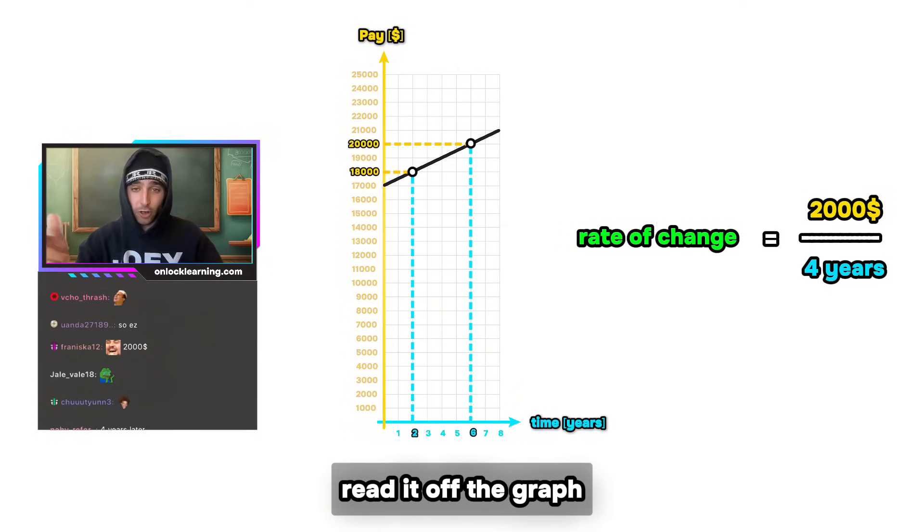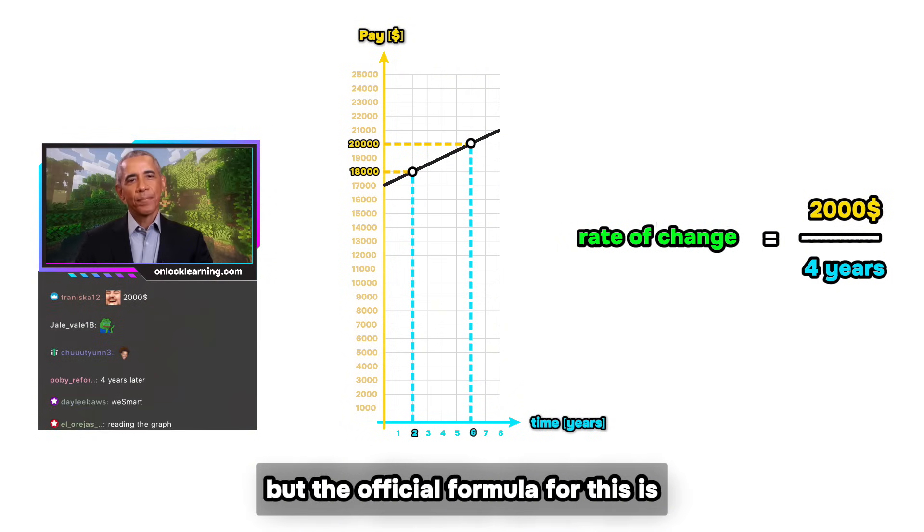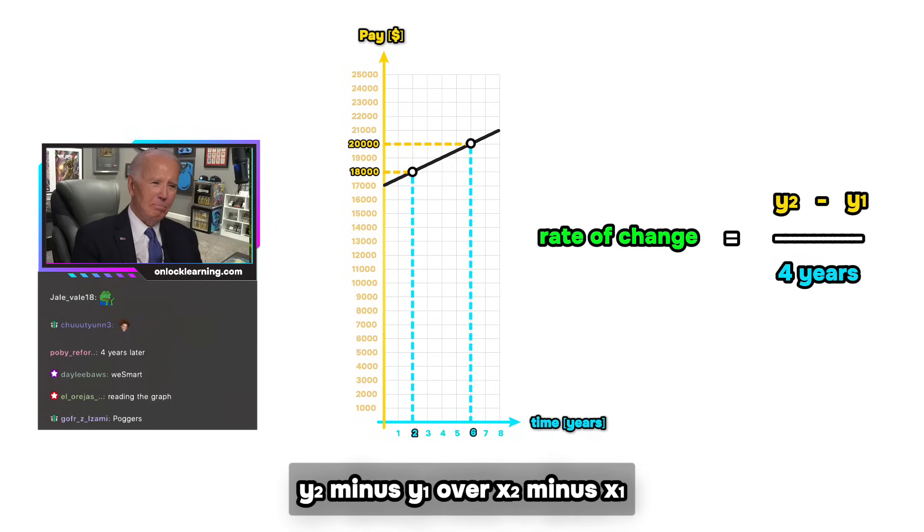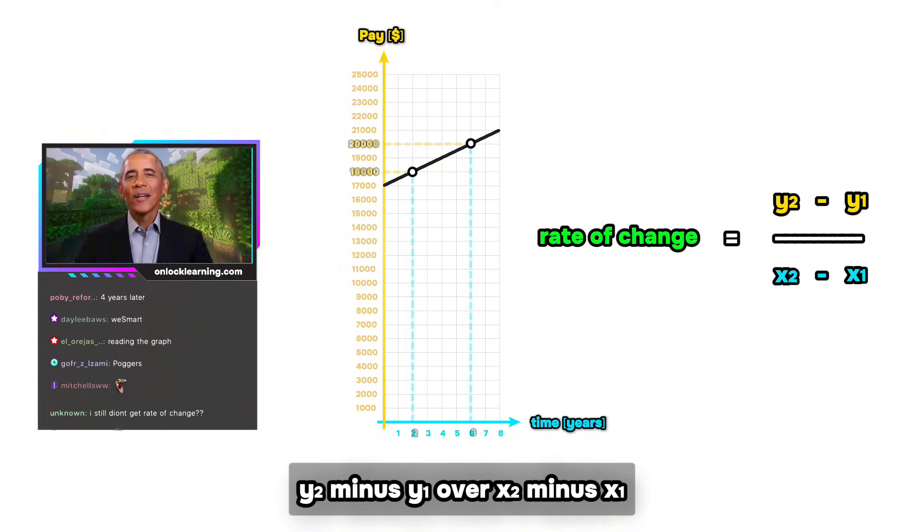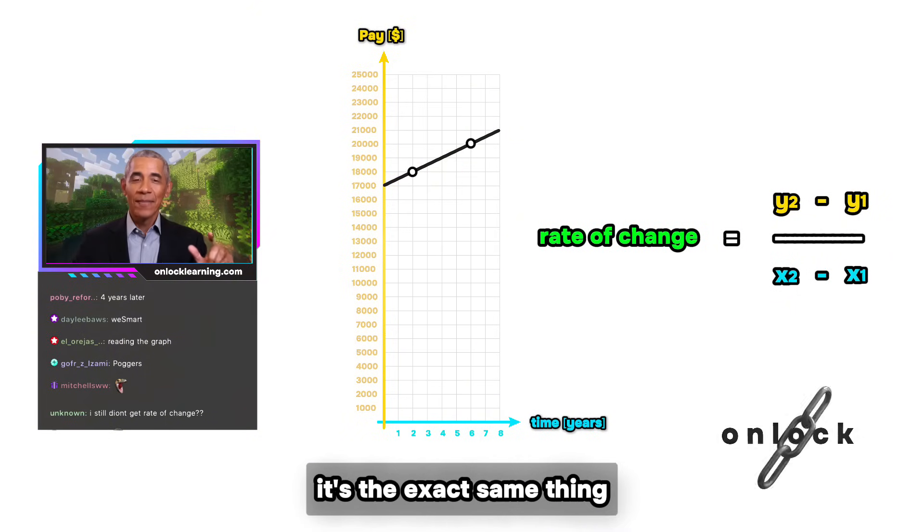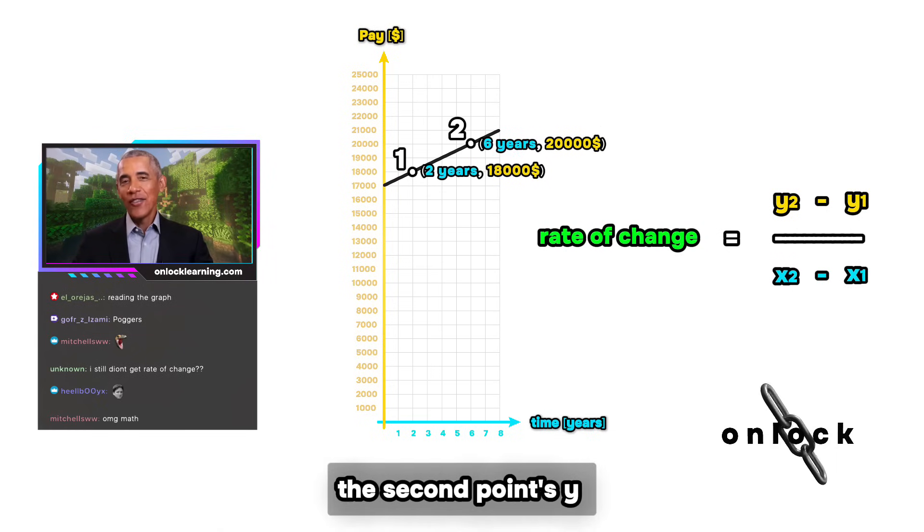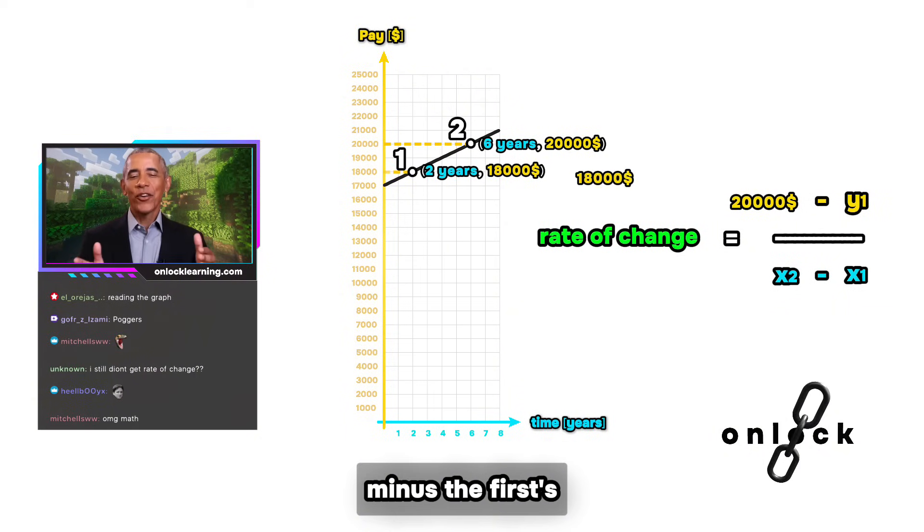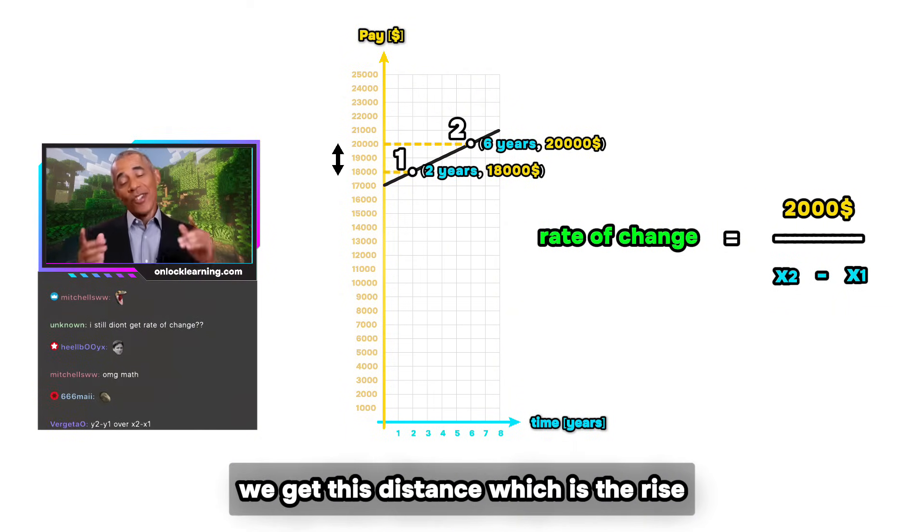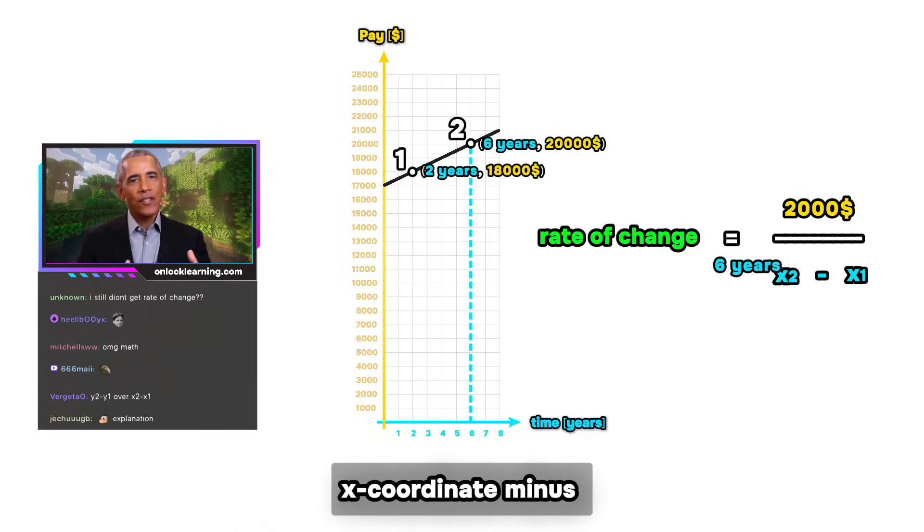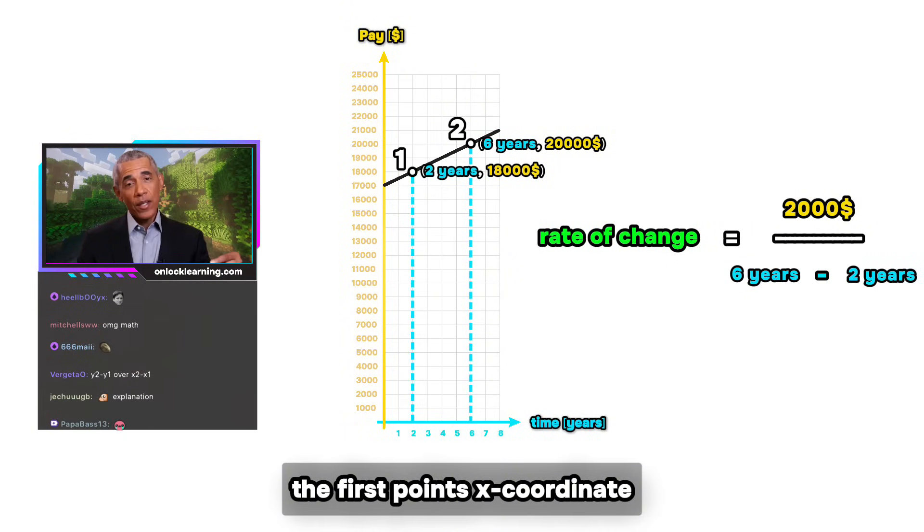You can, but the official formula for this is y2 minus y1 over x2 minus x1. What? Don't worry, it's the exact same thing. We know both coordinates of our points one and two, right? So if we did the second point's y minus the first, we get this distance, which is the rise, see. And by doing the second point's x coordinate minus the first point's x coordinate, we get this one, which is the run.